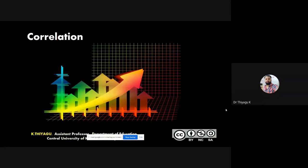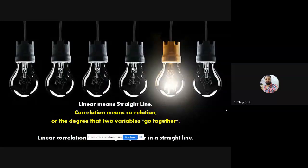I'm going to focus on how to do a correlation computation using different formulas, but today I'm going to focus on Pearson product moment correlation only. Before going into that, just a small intro about correlation, after which I'll move to the Pearson product moment correlation. Linear means it's a straight line. Non-linear represents a curve, not a straight line.